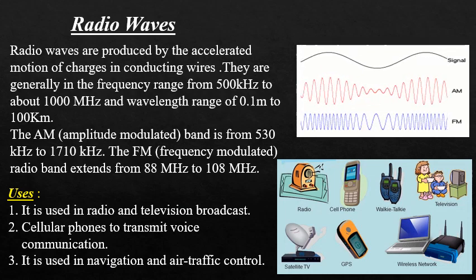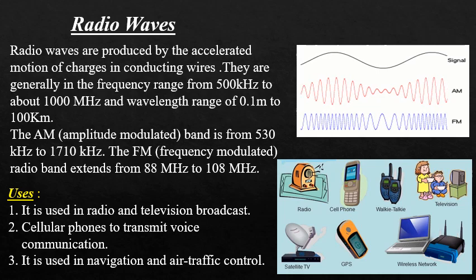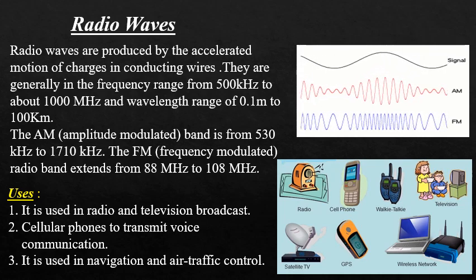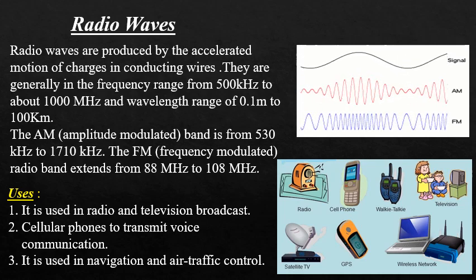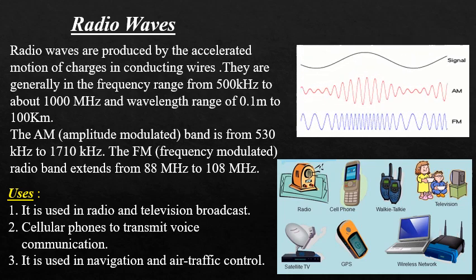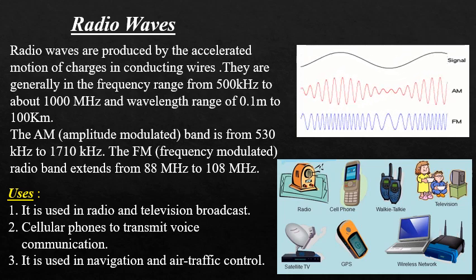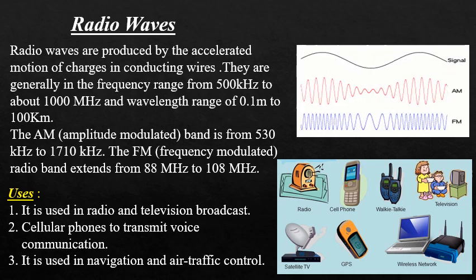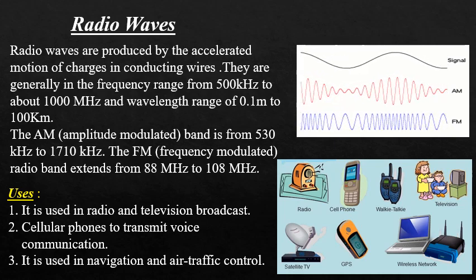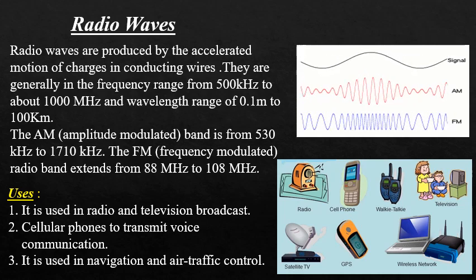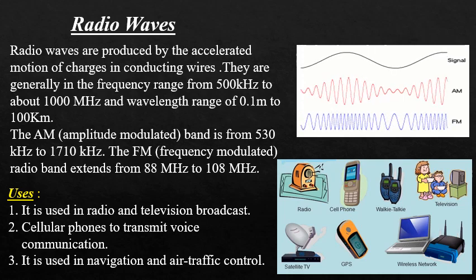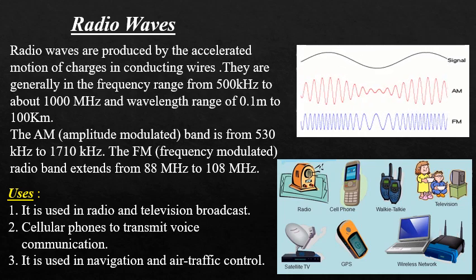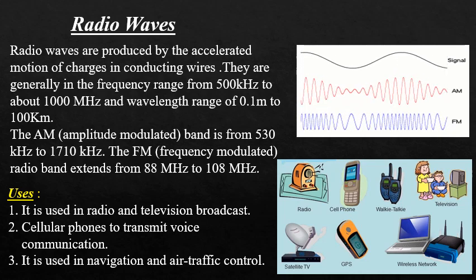Radio waves are produced by accelerated charges in conducting wires. They are generally in the frequency range of 500 kHz to about 1000 MHz and a wavelength range of 0.1 m to 100 km. The AM band is from 530 kHz to 1710 kHz, and the FM radio band extends from 88 MHz to 108 MHz. Radio waves are used in radio and television broadcasts, cellular phones for voice communication, and navigation and control of air traffic.